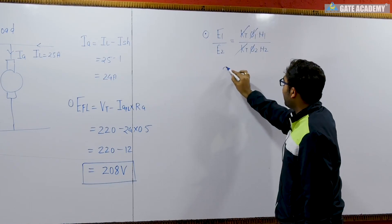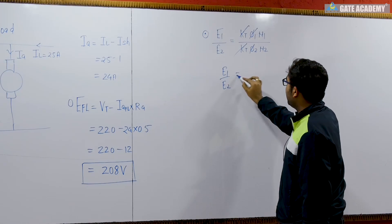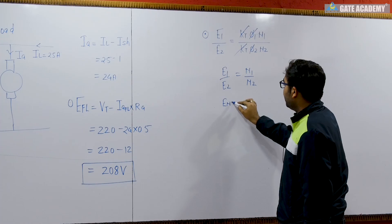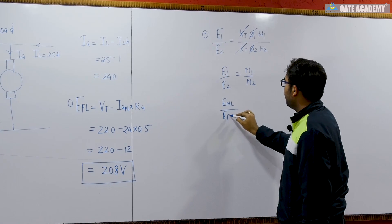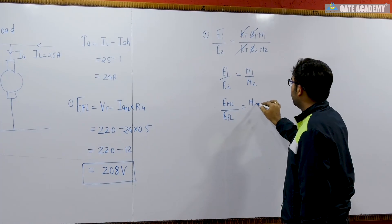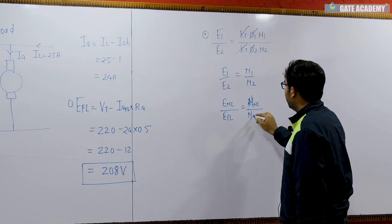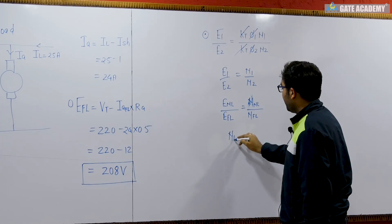So we can use E1 by E2 is equal to N1 by N2. So if I say this is no load upon full load, equal to no load speed upon speed at full load.